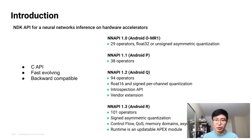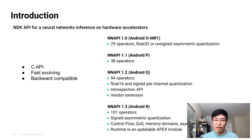Here is a brief history of the API. NNAPI 1.0 was introduced with Android OMR1 — it had 29 operators and supported FP32 and asymmetric quantization. With Android P, we added a bunch of new operators. With Android Q, many more operators were added and we started supporting FP16 and signed per-channel quantization. Additionally, developers can use the Introspection API to query available accelerators on the device and choose which to use. Vendors can also use a vendor extension mechanism to add additional functionality.